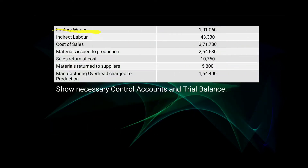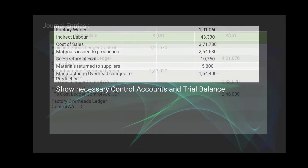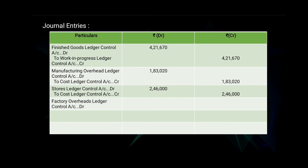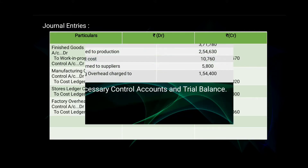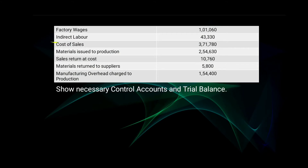Next is factory wages; the amount is 1 lakh 1,060. The journal entry will be: Factory Overheads Ledger Control Account debit, to Cost Ledger Control Account — amount 1 lakh 1,060 on the debit and on the credit side. Next is indirect labour; the amount is 43,330.